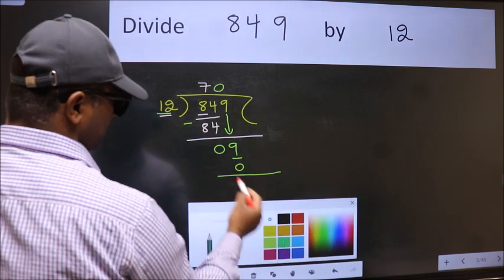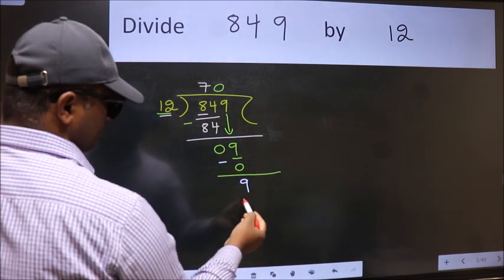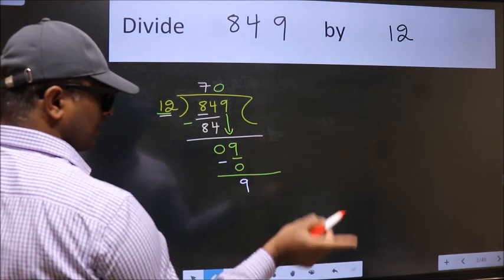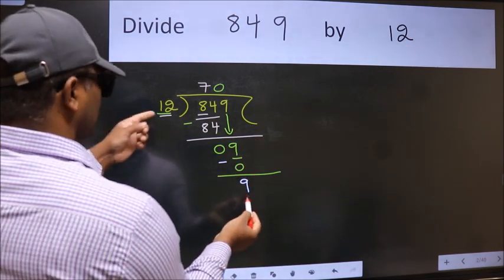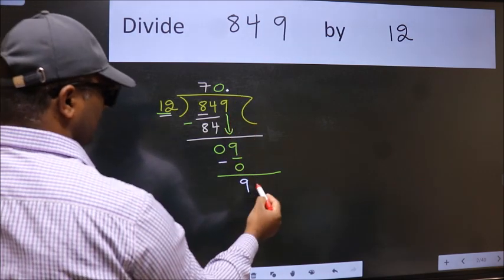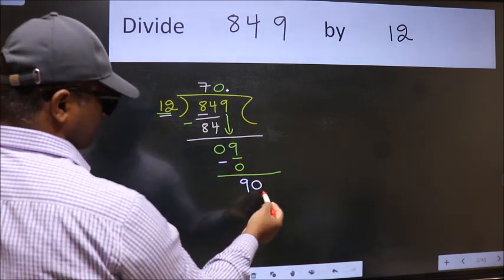Now we subtract. We get 9. Over here, we did not bring any number down. And 9 smaller than 12. So now we can put dot and take 0. So 90.